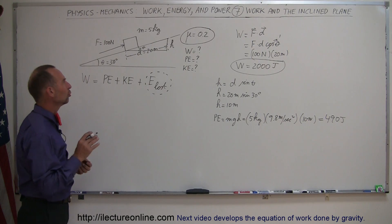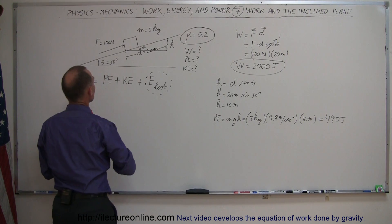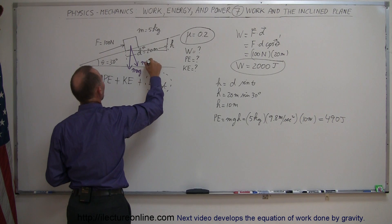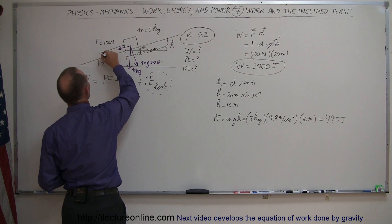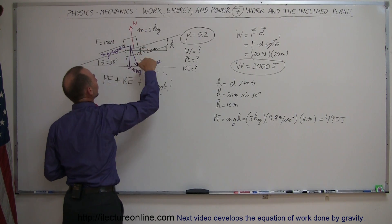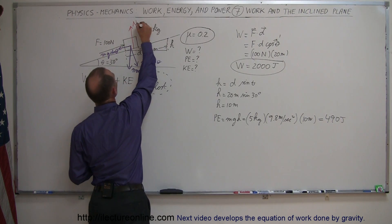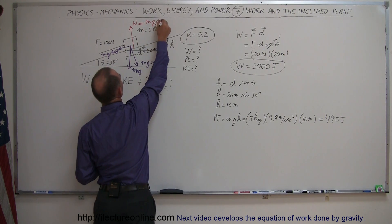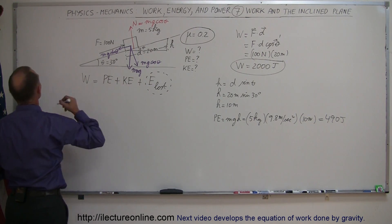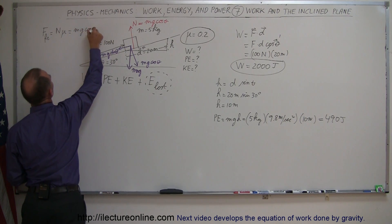Now, how much energy is lost to overcoming friction? To find that, we need the friction force. The weight of the object is Mg. The perpendicular component is Mg·cos(θ) and the component along the incline is Mg·sin(θ). The normal force equals Mg·cos(θ), and the friction force equals the normal force times mu: F_friction = μ × Mg·cos(θ).